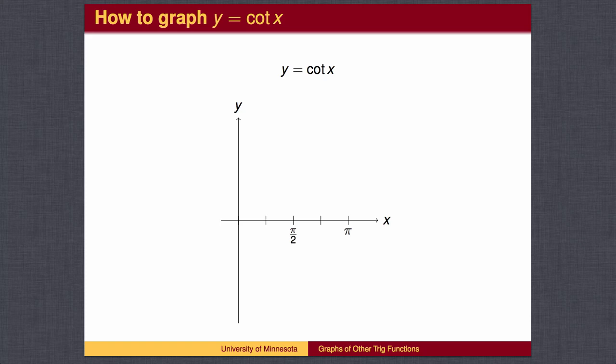Graphing y equals cotangent of x is similar. Recall that cotangent is cosine divided by sine, so that the cotangent is undefined when sine of x equals 0, which is at 0 and pi.